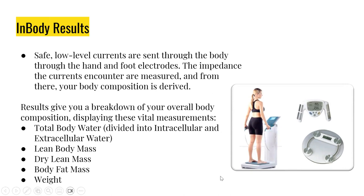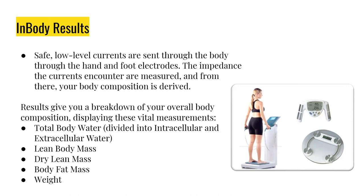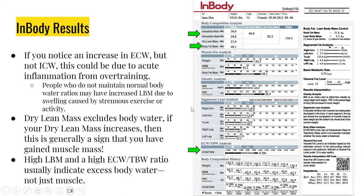Now let's talk about your InBody results. For the InBody, the measurement is done using a safe, low-level current that is sent through the body via hand and foot electrodes. The impedance the currents encounter is measured, and from there your body composition is derived. The results give you a breakdown of your overall body composition displaying vital measurements: total body water divided into intracellular and extracellular water, lean body mass, dry lean mass, body fat, and weight.